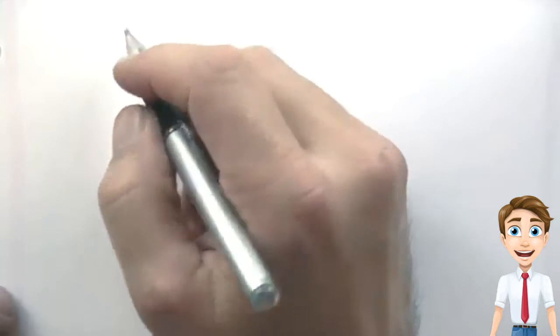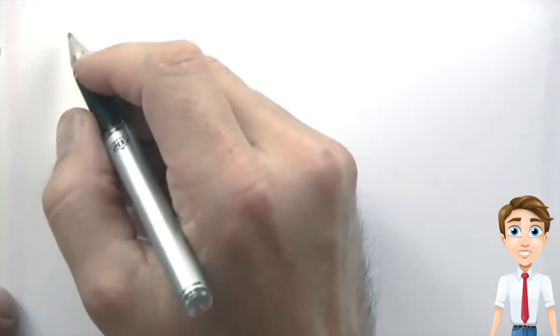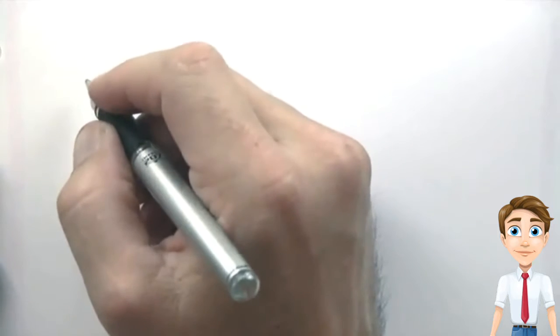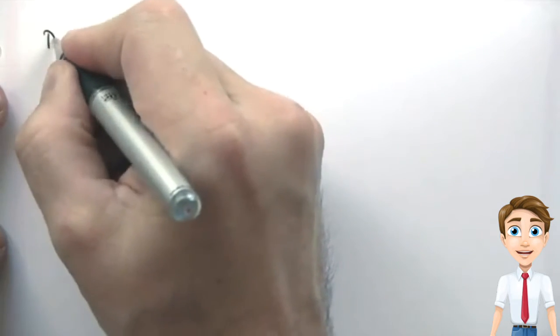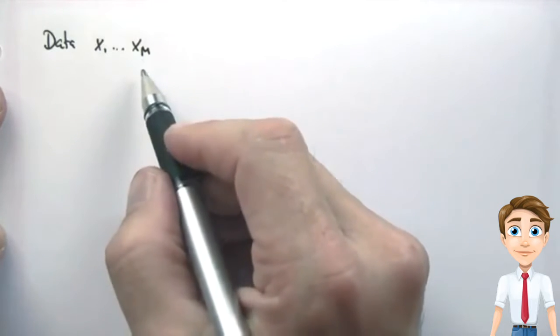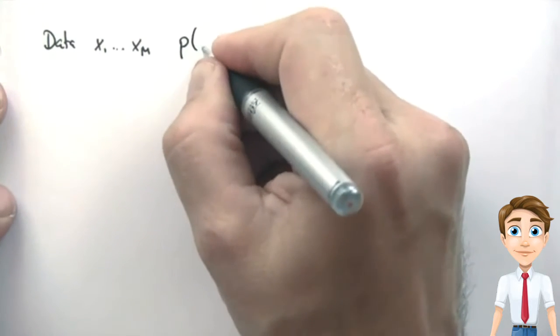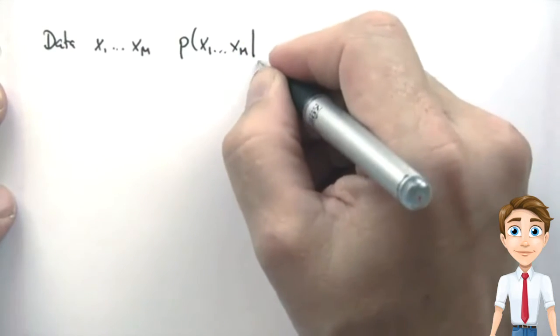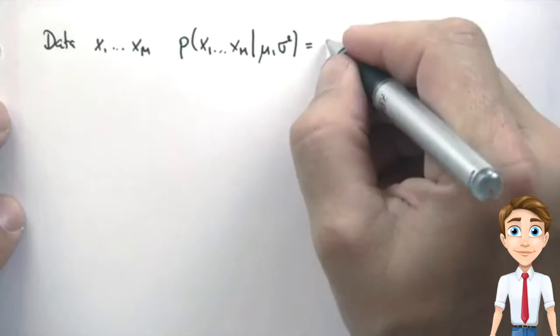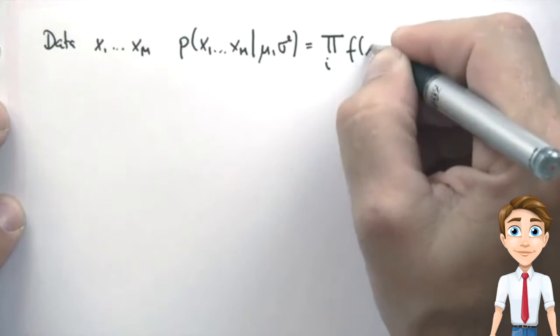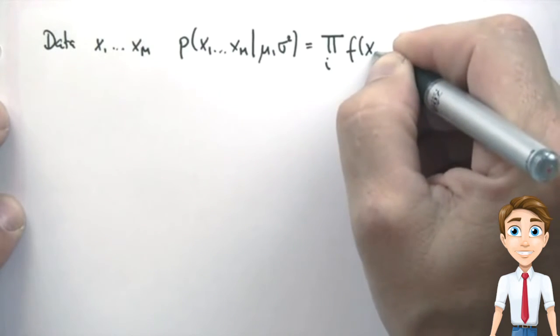Now I want to take a second to convince ourselves this is indeed the maximum likelihood estimate of the mean and the variance. Suppose our data looks like this, there's m data points. Then the probability of those data points for any Gaussian model mu and sigma squared is the product of any individual data likelihood xi.